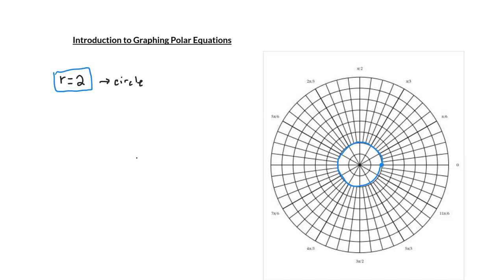Meanwhile, if you were to graph something like theta equals pi over 6, you were wondering what this would look like. So now this is a situation where the angle is fixed and the radius is free to move. So this would be pi over 6 right here.